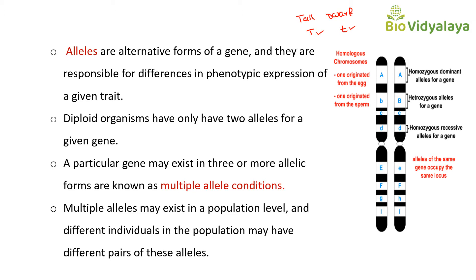But this is not true in all cases. In a population, multiple alleles exist. In the human population itself, we can see more than two alleles for a particular gene. A particular gene may exist in three or more allelic forms — this is known as the multiple alleles condition. Multiple alleles exist at the population level, not at the individual level. This is very important.